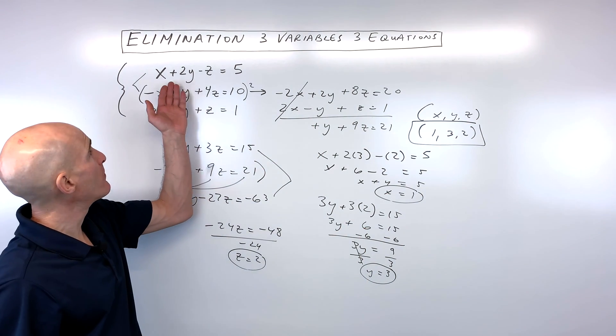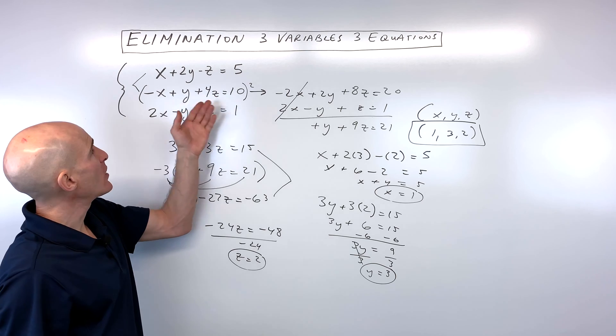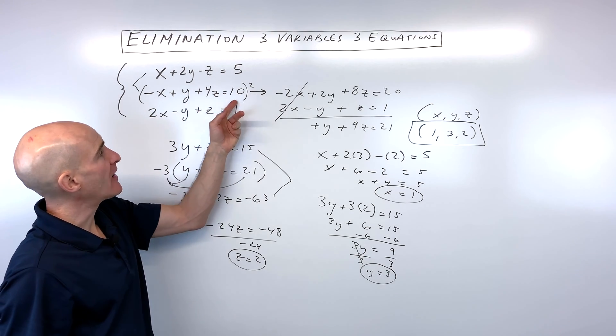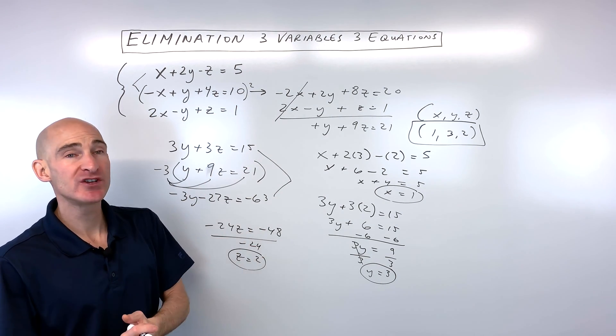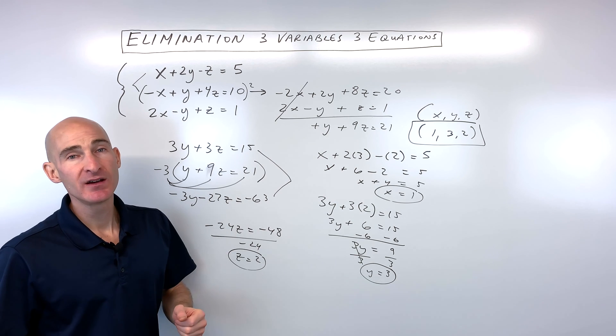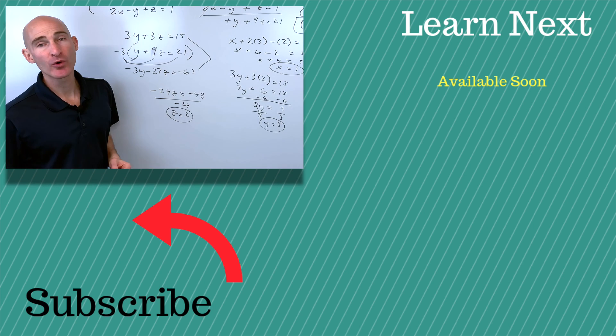Now if you want to check your work, all you have to do is put it back in for each one of these equations for x, y, and z, and you should get 5, 10, and 1. So if it makes all the equations true, you know this is the common solution for all three equations.